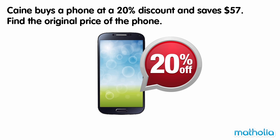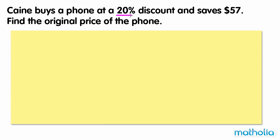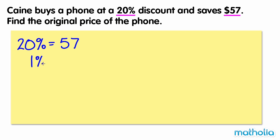Cain buys a phone at a 20% discount and saves $57. Find the original price of the phone. We know that 20% of the price equals $57. To find 1% of the price, we divide 57 by 20.